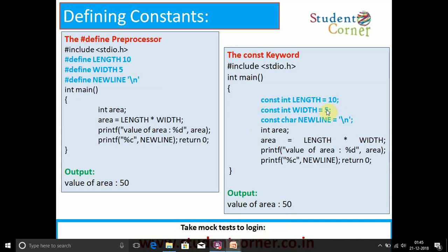In the second example, const int LENGTH = 10, const int WIDTH = 5. So here, if you are defining with #define preprocessor, before main we need to mention it. If you are using const, after the main, within the main we need to define it. Thank you.